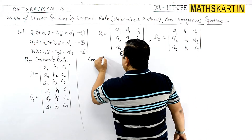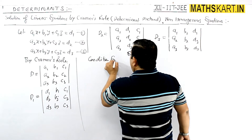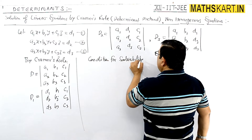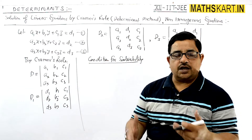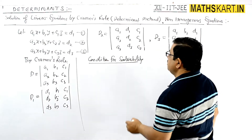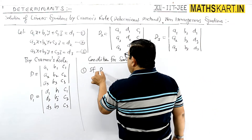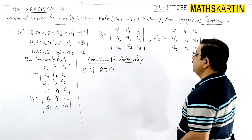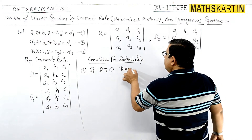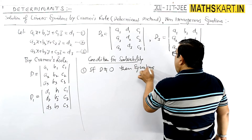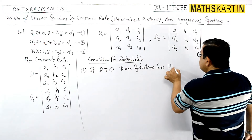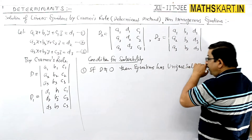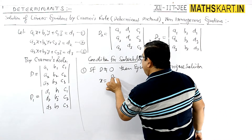Now come the conditions for solvability. First condition: if D is not equal to zero, then the equations have a unique solution. The x value is given by D1 divided by D, y value by D2 divided by D, and z value by D3 divided by D — very easy to find out the values for the unique solution.